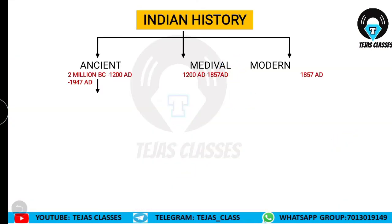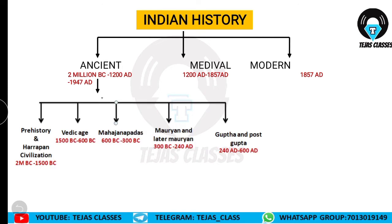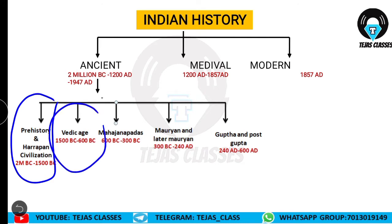First, let's briefly review the Indian history classification as we did in earlier classes. Indian history is broadly classified into ancient, medieval and modern history. Ancient history is further classified into five parts. Up to now we have completed prehistory and Harappan civilization, and now we are going to enter the Vedic age. Immediately after or during the decline of the Indus Valley civilization, the Vedic age started with the advent of Indo-Aryans.